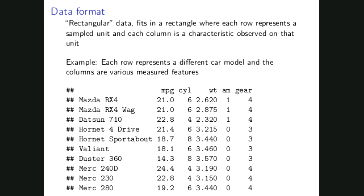Rectangular data fits in a rectangle where every row represents a sampled unit or can be referred to as an observation, and every column corresponds to some kind of characteristic you measured on this unit or a variable, something you've observed on that unit. This is what you want your data to look like.